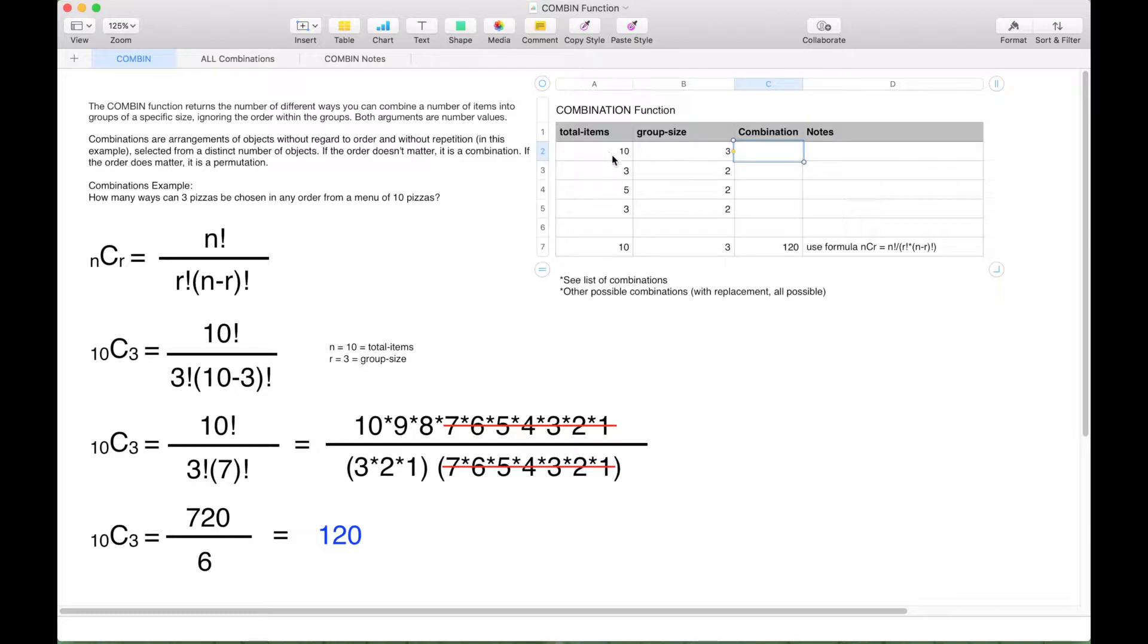So here we have our total items, which is 10, and our group size, which is 3, which matches our example here. Let's hit equals, type in COMBIN. The COMBIN function takes two arguments, total items and group size. Let's put in 10 for the first argument and 3 for the second. Let's go ahead and hit the check mark, and we should get 120, and we do. That's good.